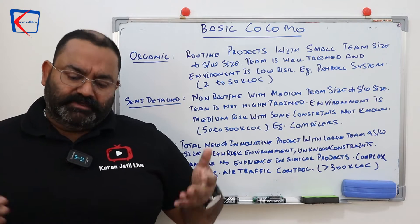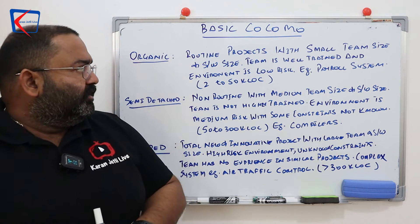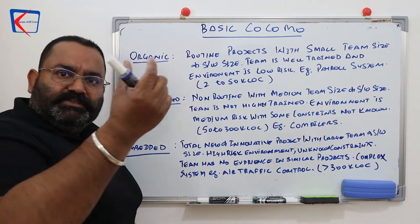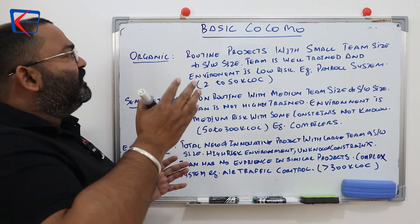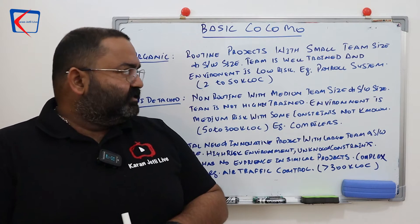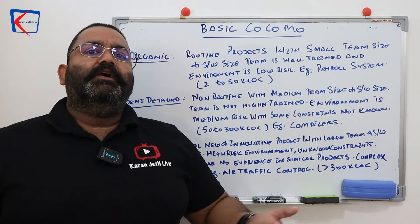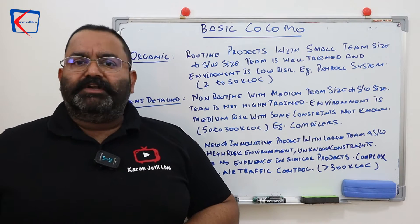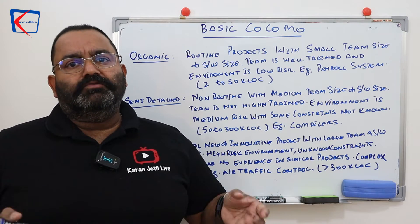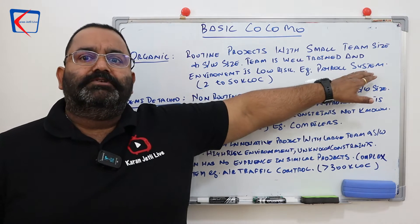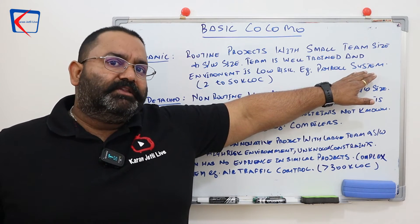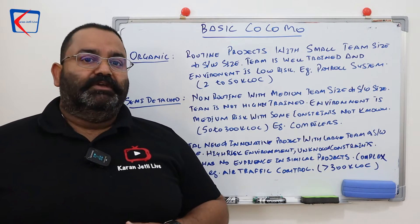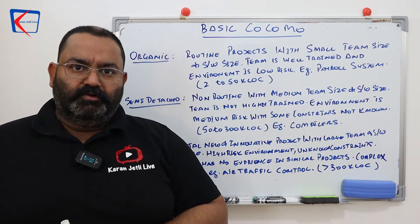An organic project is a routine project — one which we develop routinely, where the team is small, well-trained, and the environment is well known and well understood. For example, a payroll system — nothing new, the team knows what they are doing. The average size of an organic project is 2 to 50 KLOC, that is 2 to 50 kilo lines of code.